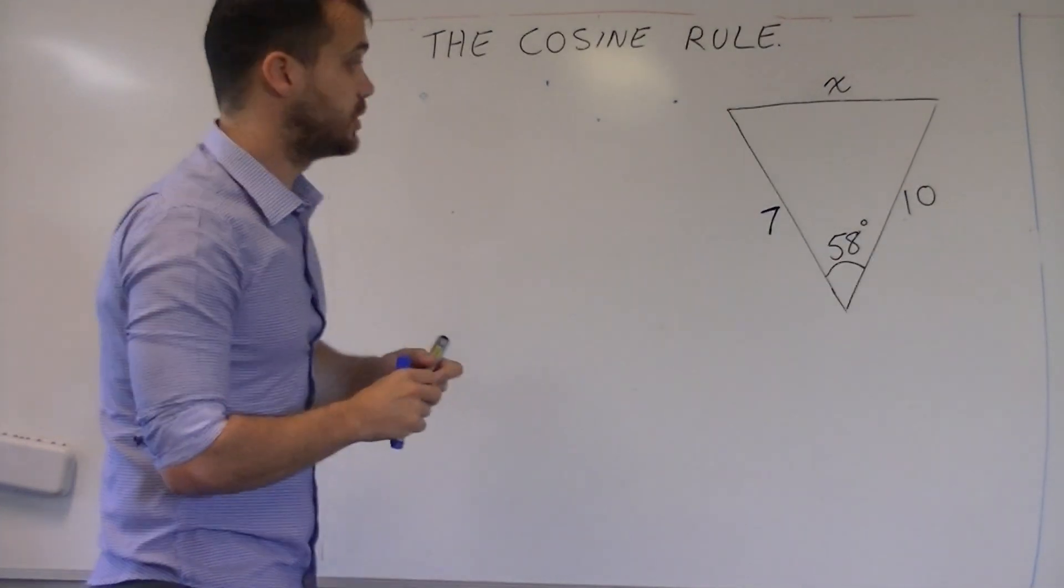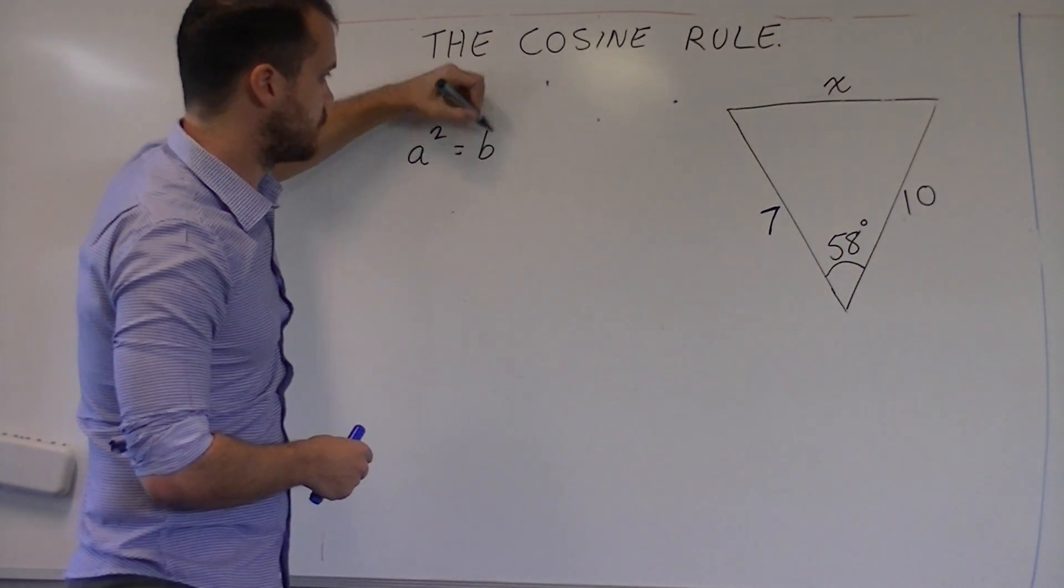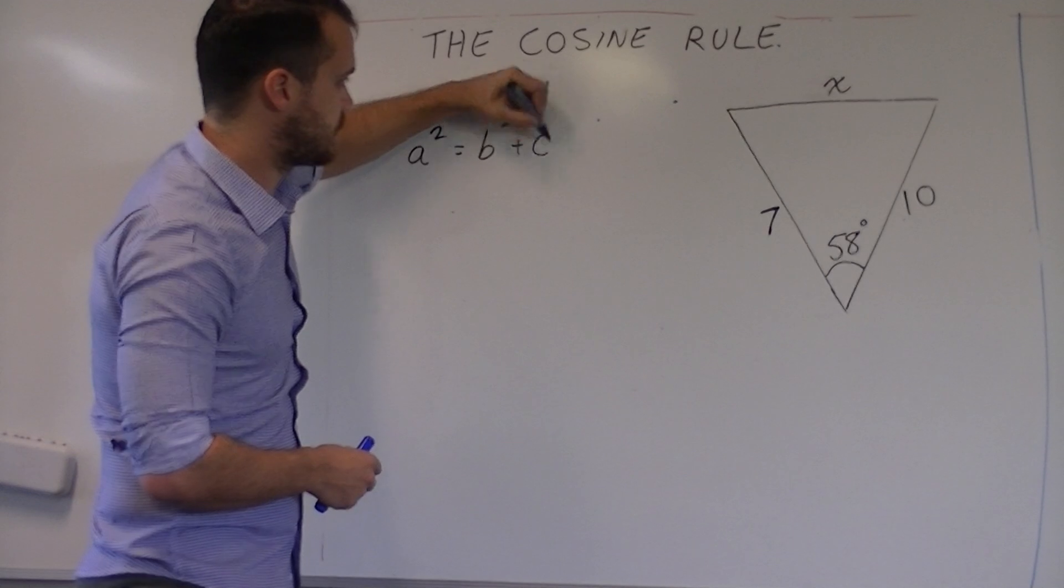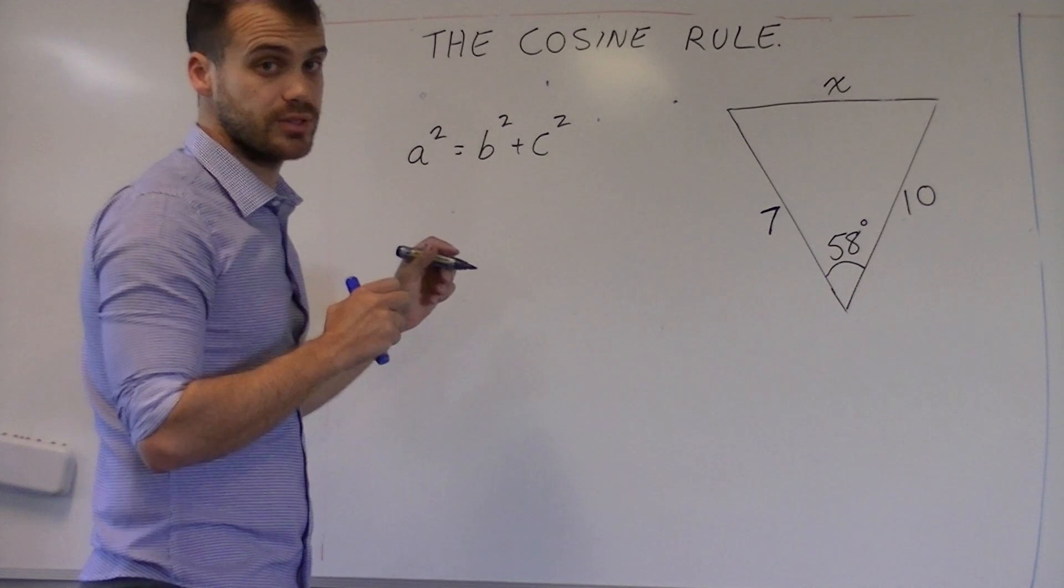Now the cosine rule is as follows. a squared equals b squared plus c squared. Now that should be familiar from previously, the Pythagoras' theorem.